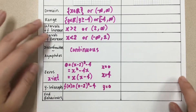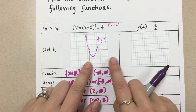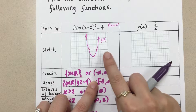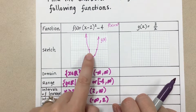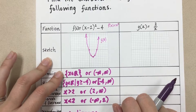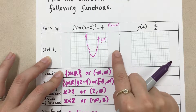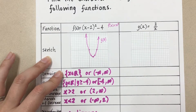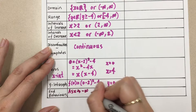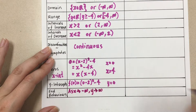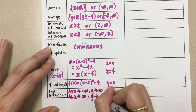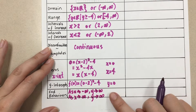For end behavior, we look at what happens to y as x approaches negative infinity and positive infinity. As x approaches negative infinity, y approaches positive infinity. As x approaches positive infinity, y also approaches positive infinity. Both ends go up because we have an open-up parabola.